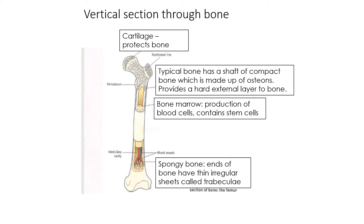Inside the bone is bone marrow, where the production of blood cells takes place. Then we have the spongy part of the bone, which ends in thin irregular sheets called trabeculae.